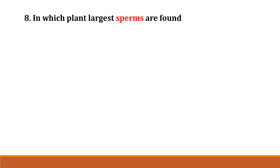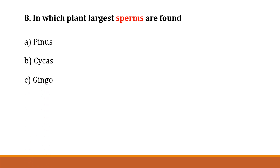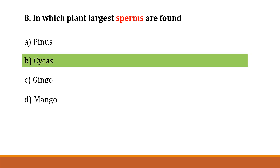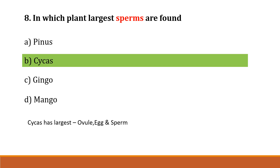Question number 8: In which plant are the largest sperm found? Option A: Pinus, Option B: Cycas, Option C: Ginkgo, Option D: Mango. The correct answer is Option B, Cycas. Cycas has the largest ovule, egg, and sperm.